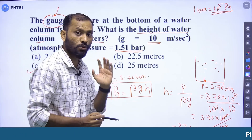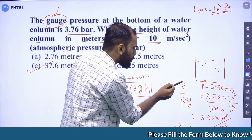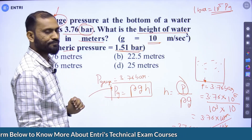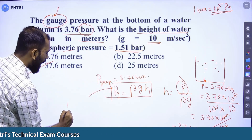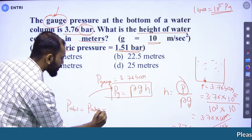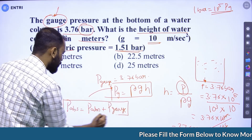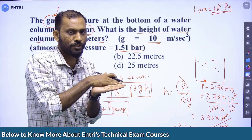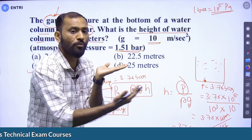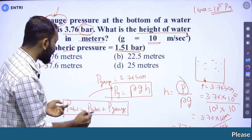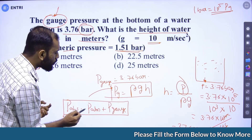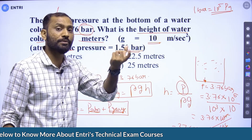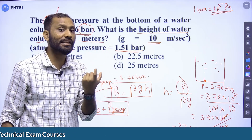By direct substitution, gauge pressure = rho × g × h, where h = P / (rho × g). We must ensure consistent units when substituting pressure in bar. Also important: absolute pressure = atmospheric pressure plus gauge pressure.